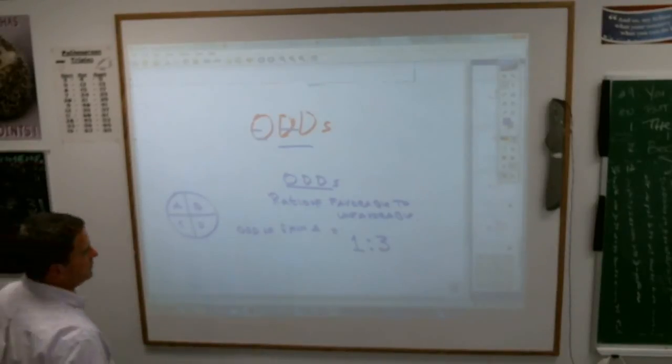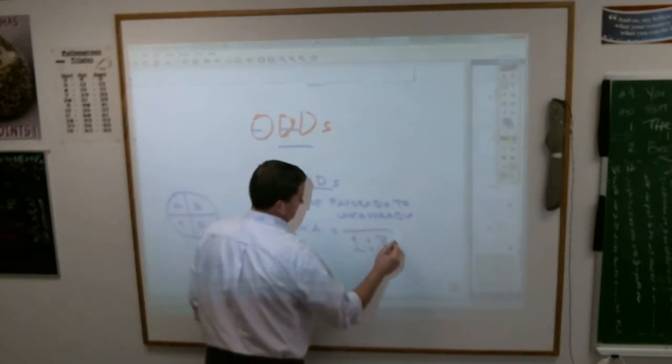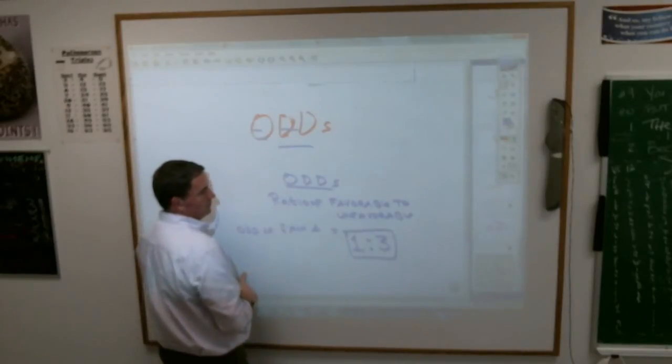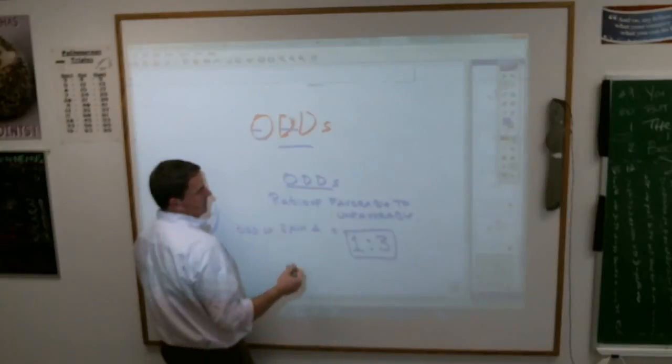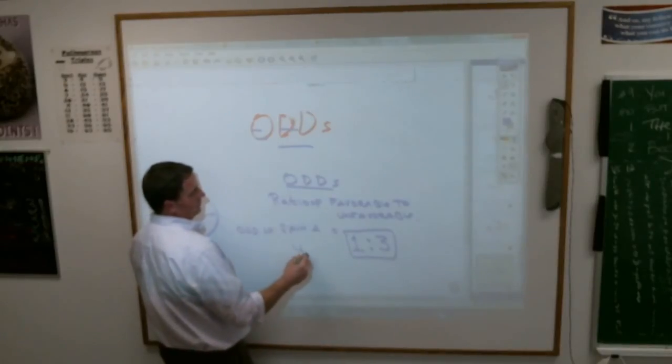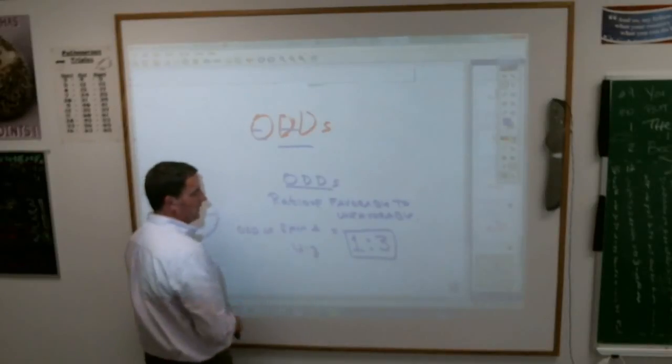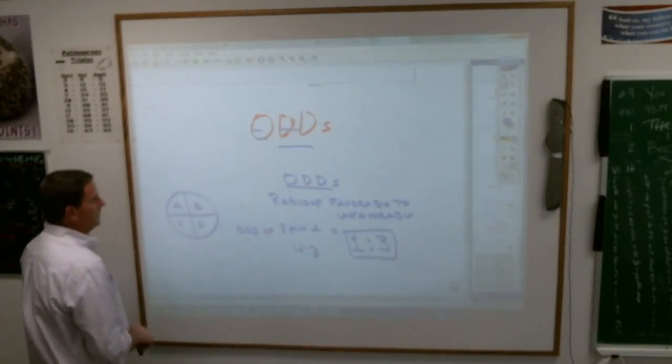If you're doing odds, you would express it like this. It's a ratio like that. You go to the horse track, it's like four to three. If your odds are four to three, that means it's four good to three bad. Got it?